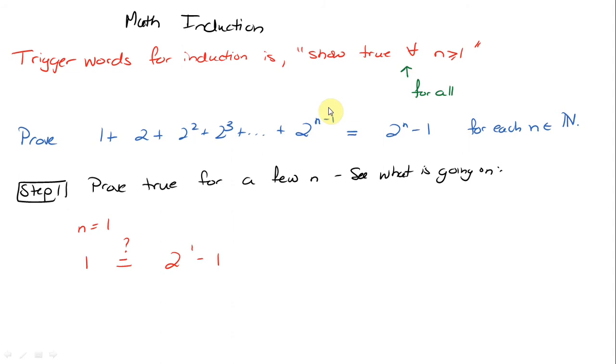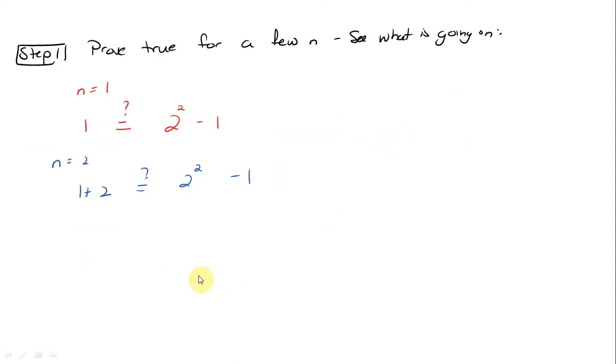If I put in n equals one on this side, I get two minus one, and it's indeed true that one equals one. Now let's try n equals two. I get one plus two on this side, and on this side I get three, so they're equal.